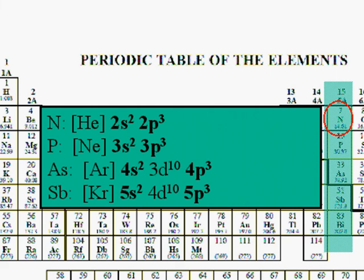The same is true for phosphorus and other members of this group. The outermost or valence shell has 5 electrons, 2 in the s orbital and 3 in the p orbitals.